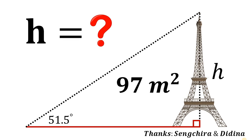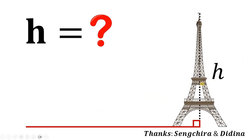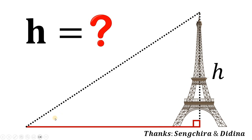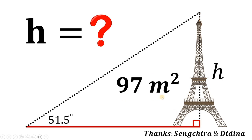For today's video, we will answer a math challenge given by one of our followers. The question goes like this: given a tower with the height of H, from a point to the top of the tower it makes an angle of 51.5 degrees, and the area of the right triangle formed must be equal to 97 square meters. The question is: what is the height of the tower? Thanks to Saint Chira and Didina for suggesting this question.